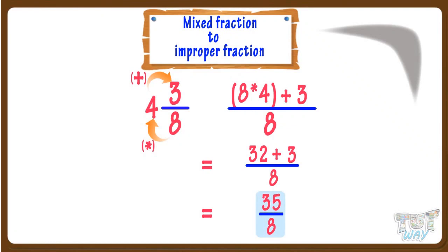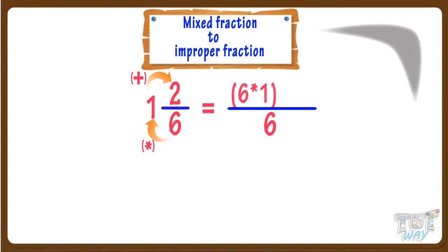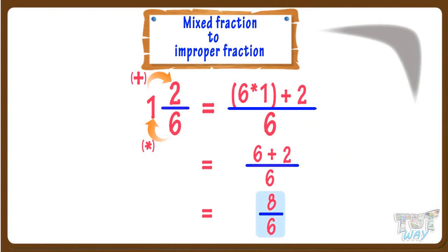Now let's see another example. Here we have a mixed fraction — let's convert it to an improper fraction. The denominator remains the same. For the numerator, we multiply the denominator with the whole number and then add the numerator. So here, multiply 6 with 1 and then add 2 to it. 6 multiplied by 1 is 6, and adding 2 gives us 8. So 8 by 6 is the improper fraction for this mixed fraction.